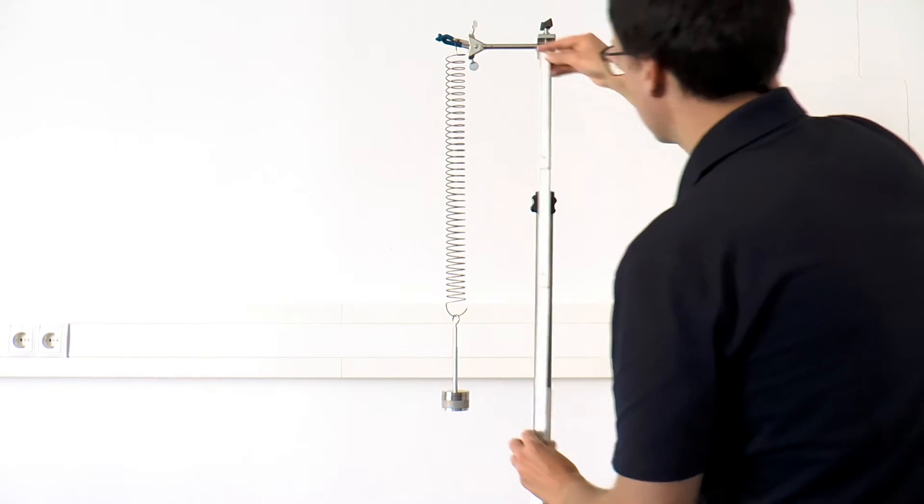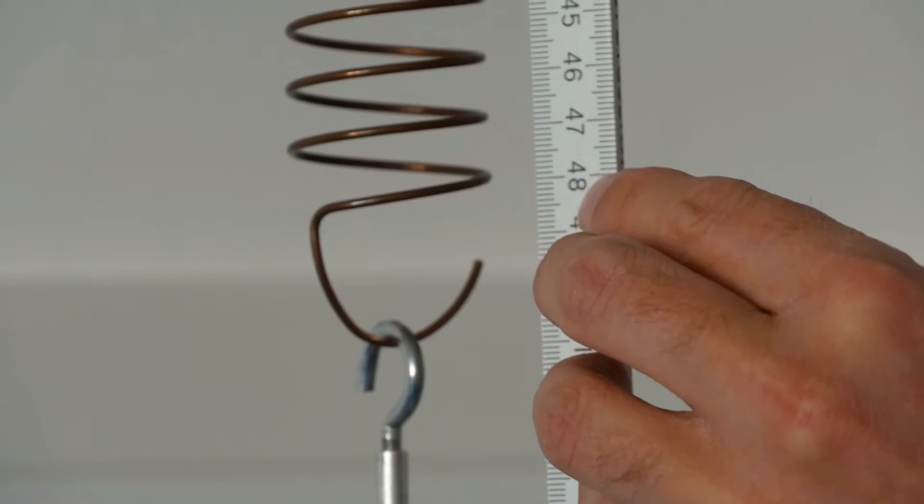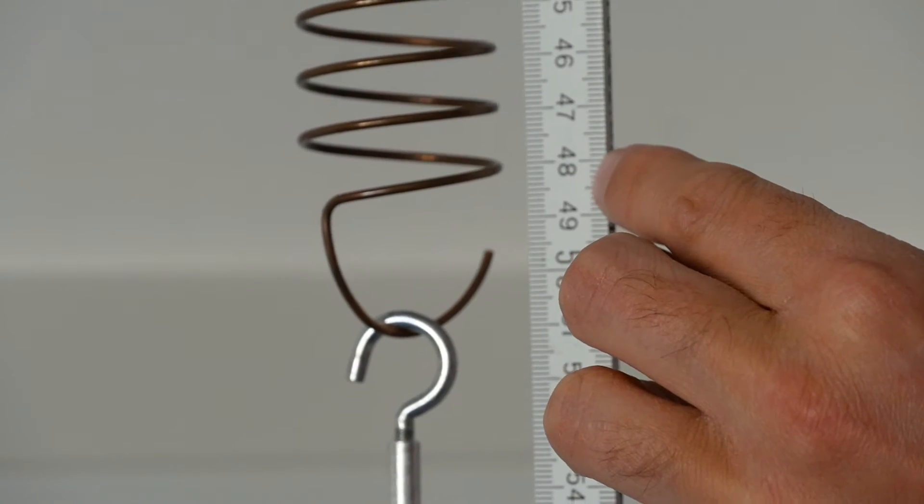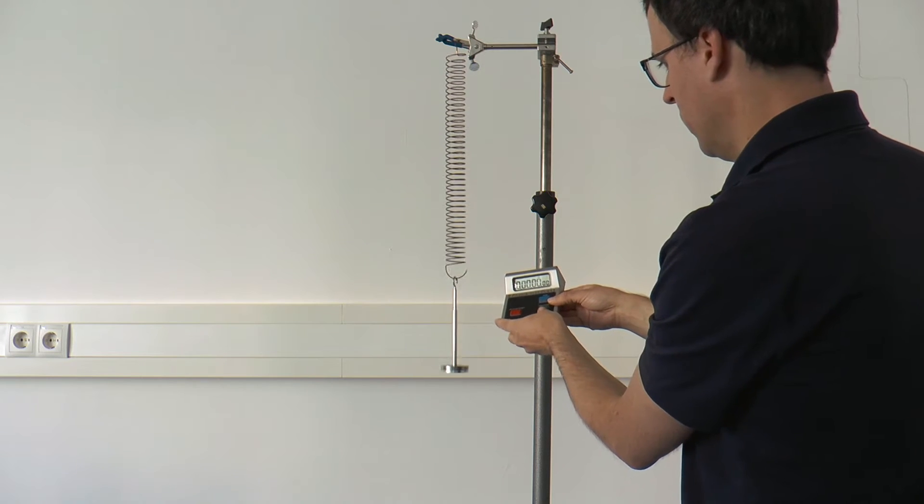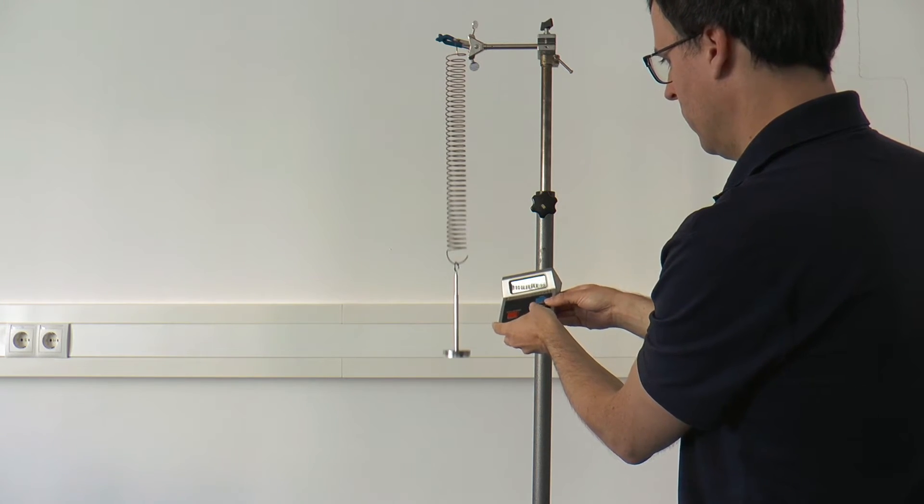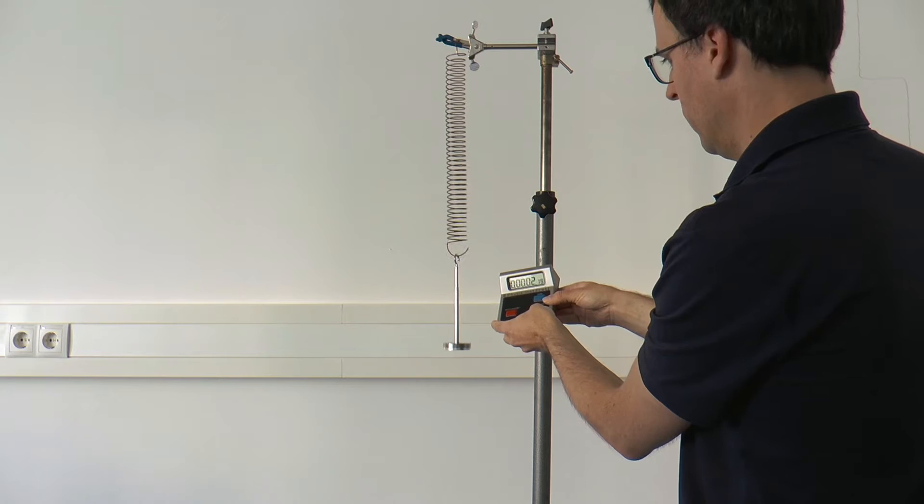For the dynamic determination of the spring constant, the spring with the attached mass is deflected and thus set into oscillation. The effective mass of the spring is relevant for the oscillation, which depends on the attached mass and the pure spring mass.